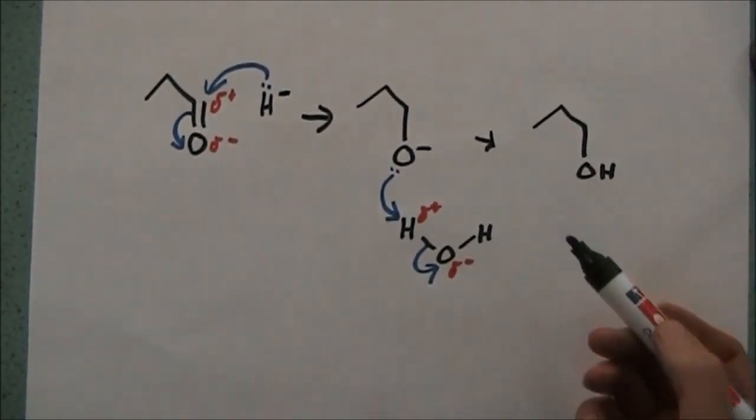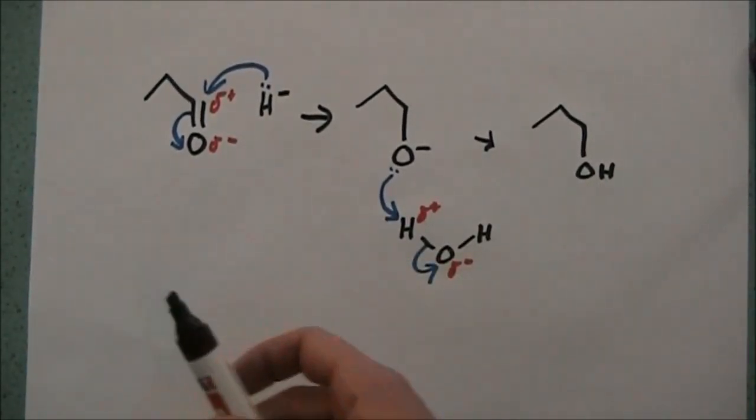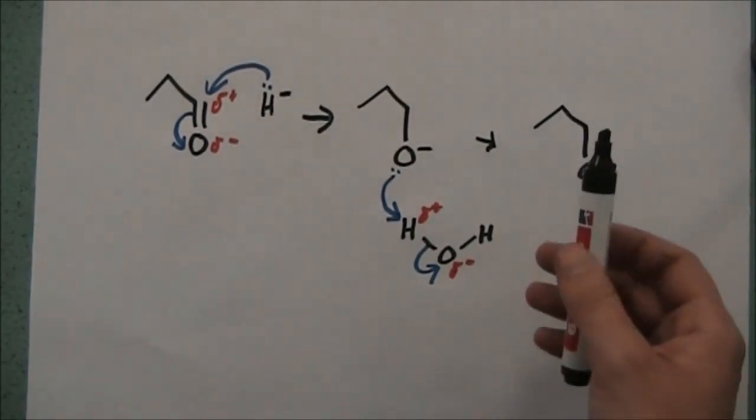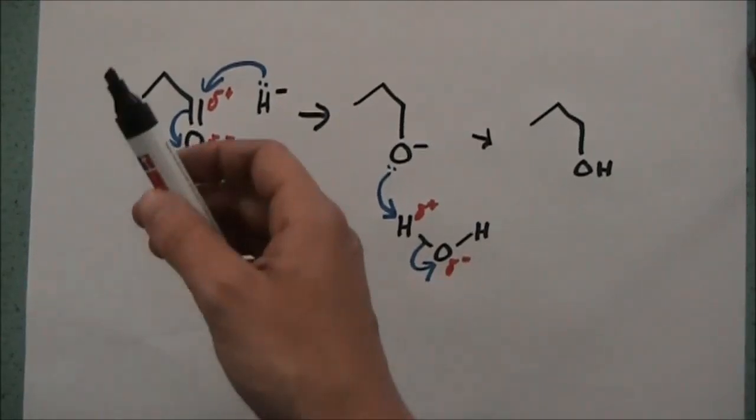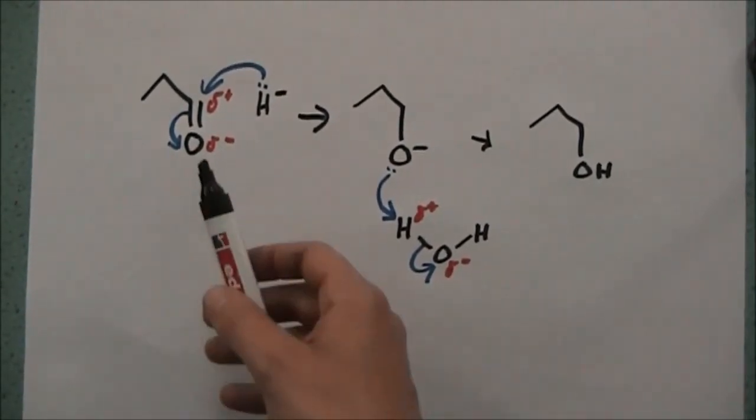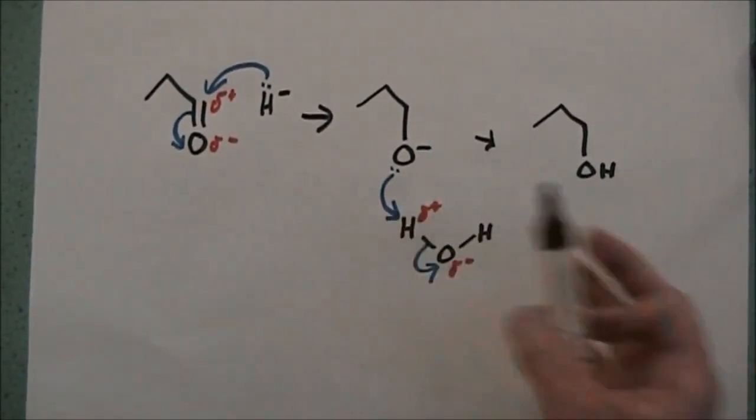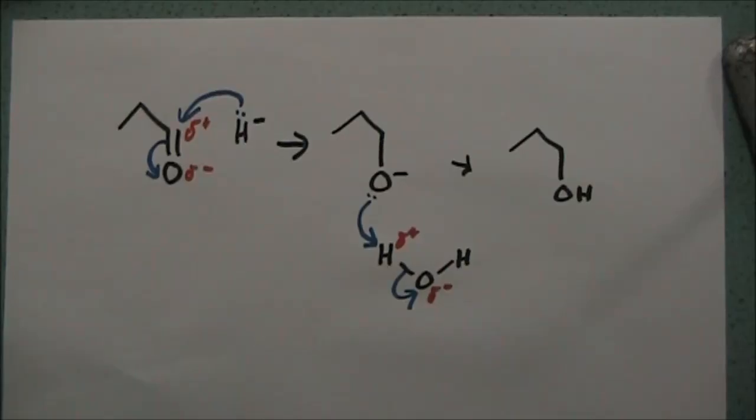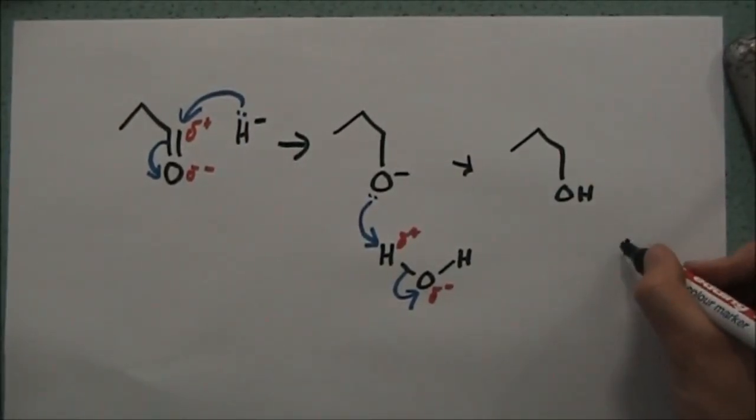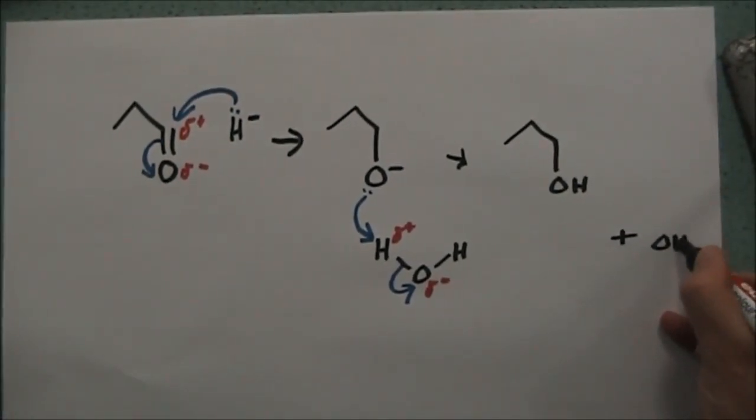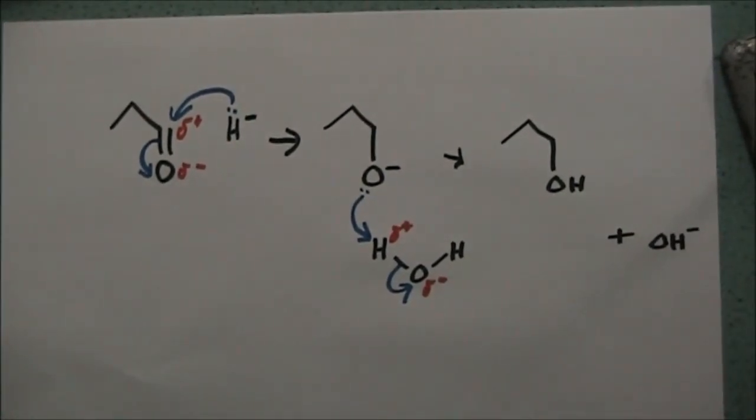And so what we've done here is we've basically taken the opposite of what you learnt in AS. We took in AS a primary alcohol, we distilled it with an oxidizing agent, and we ended up with an aldehyde. Now we're taking aldehyde, we're using a reducing agent to go the reverse direction. And what becomes the water molecule? Well, the water molecule is left as an OH minus, a hydroxide ion.